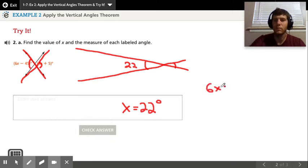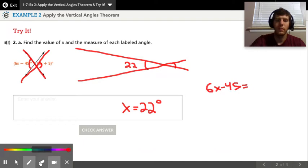So you're going to say 6x minus 45 is going to equal 4x plus 5.